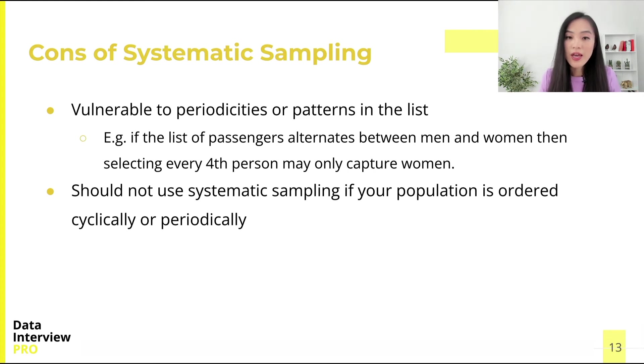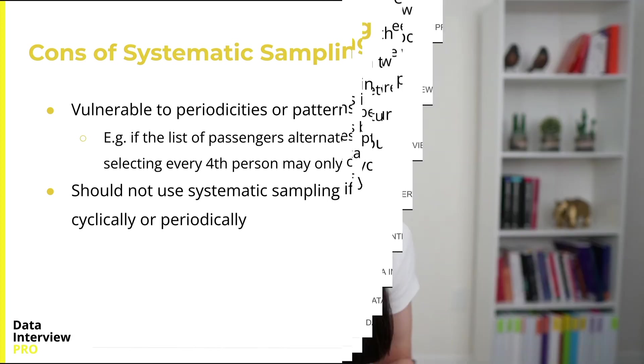You should not use systematic sampling if your population is ordered cyclically or periodically, as your resulting sample cannot be guaranteed to be representative. We just learned systematic sampling — there are two more sampling methods to go: stratified sampling and cluster sampling. See you in the next video!